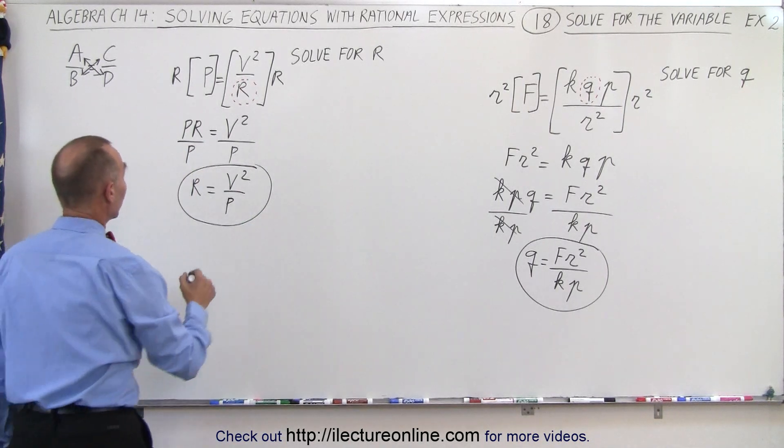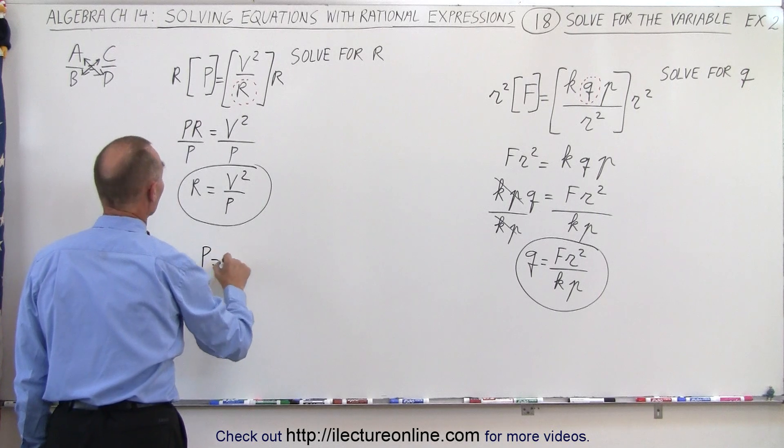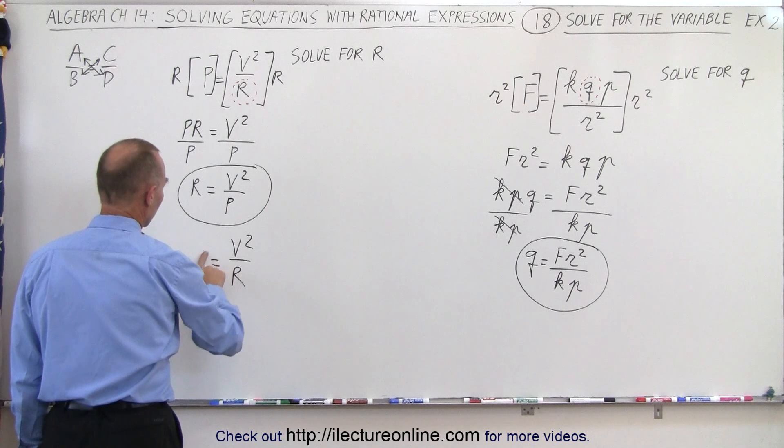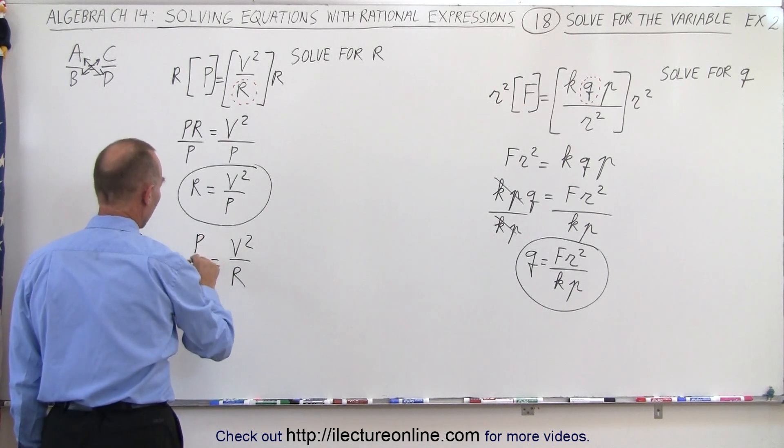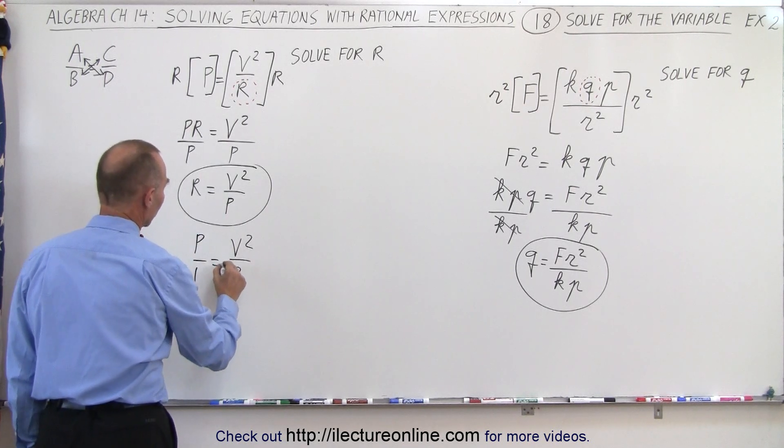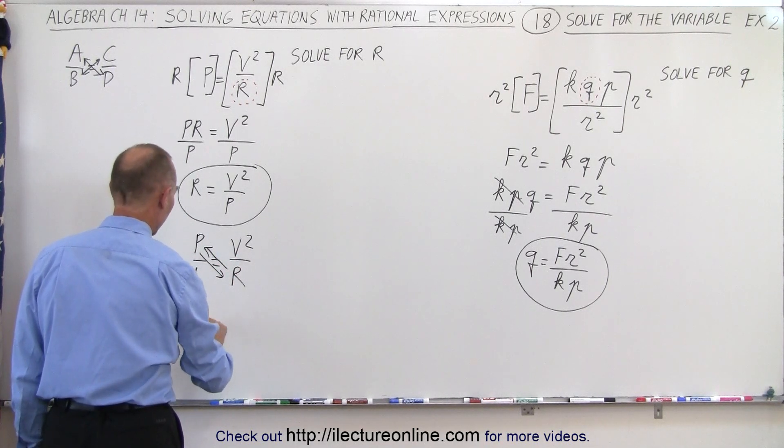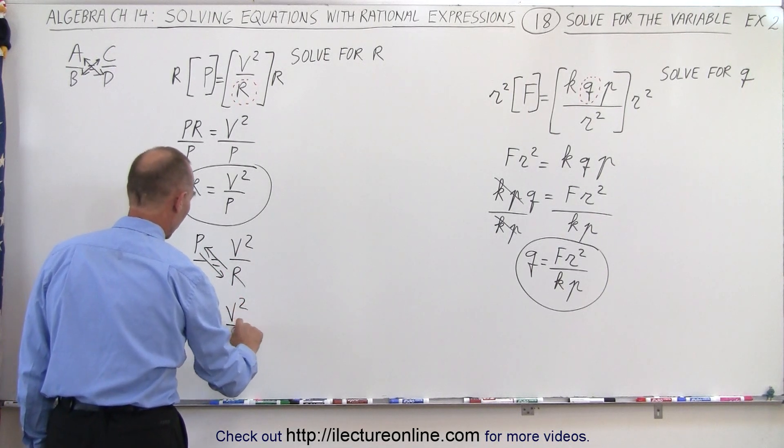Of course, what we could have also done is said p equals v squared over r. And so you can think of this, let me move this up a little bit, as p over 1. I can move the r this way, and I can move the p this way. And so I can say that r is equal to v squared over p. So in one step, I can solve for r.